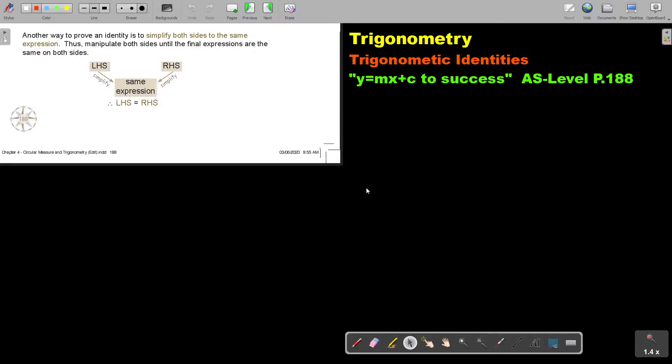In this video, we will continue with trigonometric identities. You will find this on page 188 in the Namibia AS level mathematics textbook, y equals mx plus c to success.